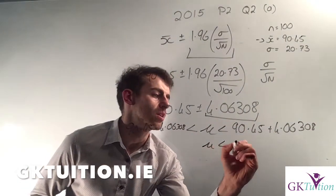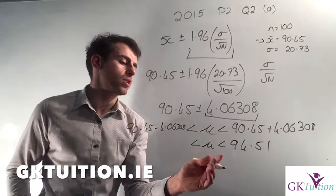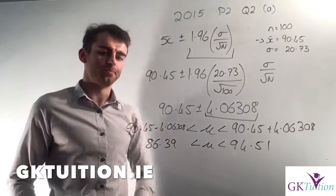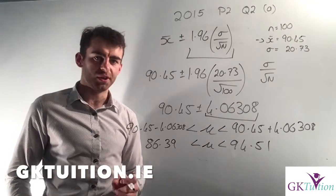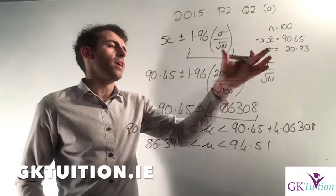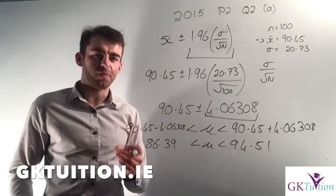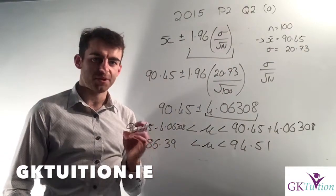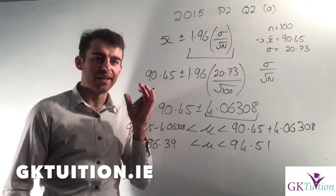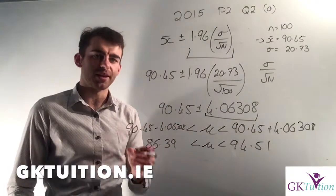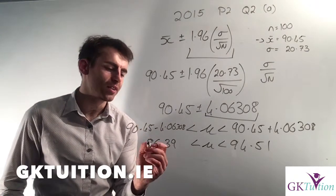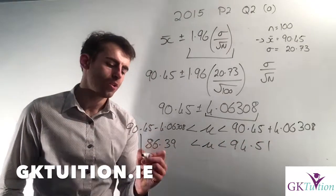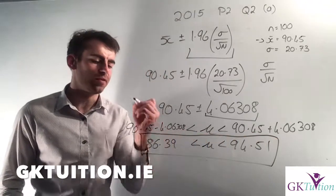So my final answer is: mu must lie somewhere between less than 90.45 plus the degree to which I could be wrong. My final answer is mu is less than €94.51 but greater than €86.39. This is my 95% confidence interval. Based on my calculations, I can be 95% confident that if I had surveyed every single person who went to the supermarket that Saturday, there's a 95% chance the average spend would have been greater than €86.39 and less than €94.51.